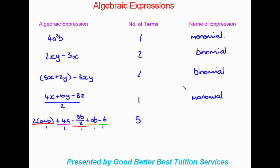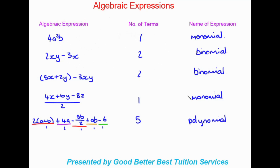When we exceed or reach four terms, we call the expression a polynomial — 'poly' for multiple. So to summarise: monomial for one term, binomial for two, trinomial for three terms, and polynomial for four or more terms.